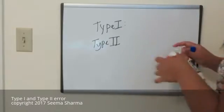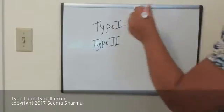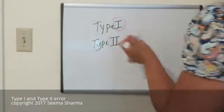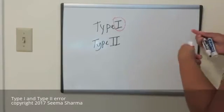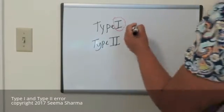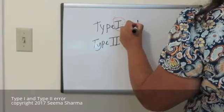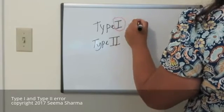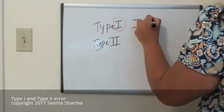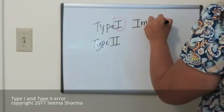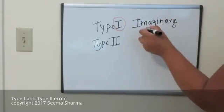See, this Type I error is written with a Roman numeral I. So it is the chance that what you're seeing is imaginary.